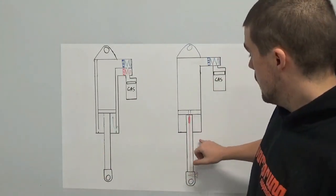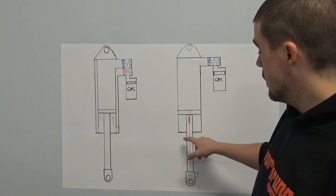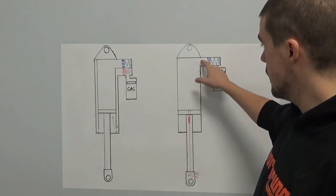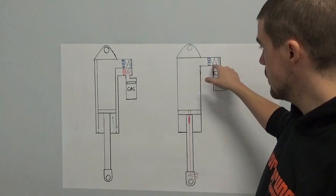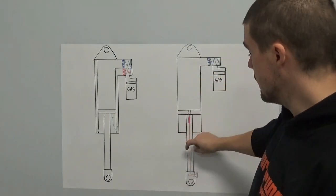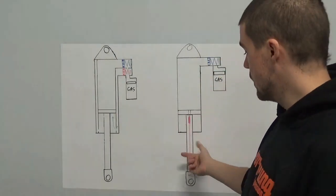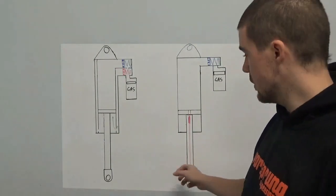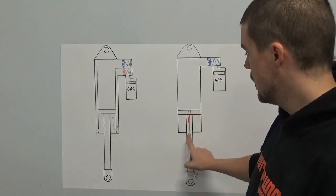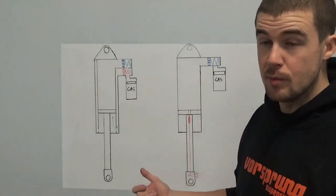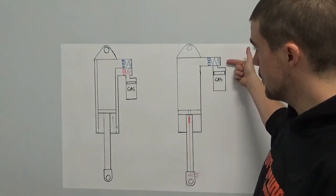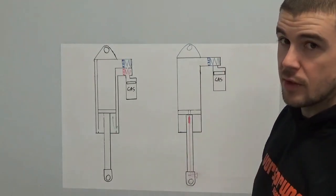In this one, by necessity, in order to get a substantial amount of damping force through the compression adjuster up here, you need to have a relatively large diameter shaft. There's also a minimum diameter that you can realistically have in order to be able to have the rebound adjuster up through the middle of it, because we don't have the opportunity to run the rebound adjuster up in the bridge there.